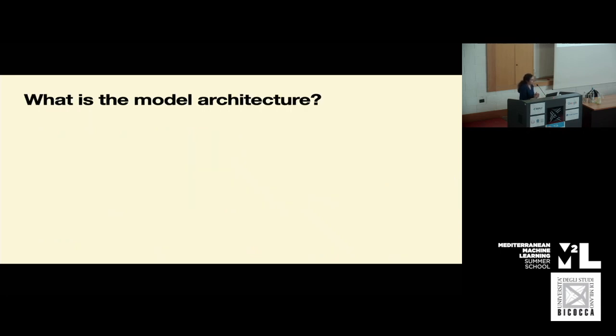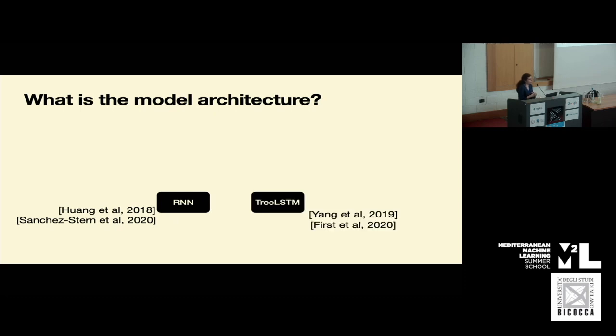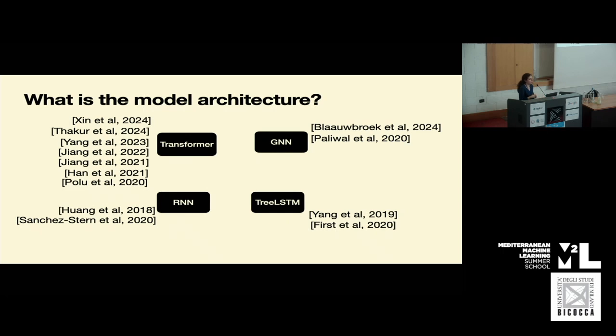Another thing that goes into making a good model is suitable architecture to represent the different facets of the proving environment, namely the proof state, premises, and maybe even the proof up to the current point. Early work started with RNNs. Other work used the underlying abstract syntax tree representation of the proof state, and so used tree LSTMs. Recent work has used GNNs, since the relationship between different definitions and lemmas can be represented by a graph. But most obviously explored recently are transformers, specifically transformer-based pre-trained LLMs.